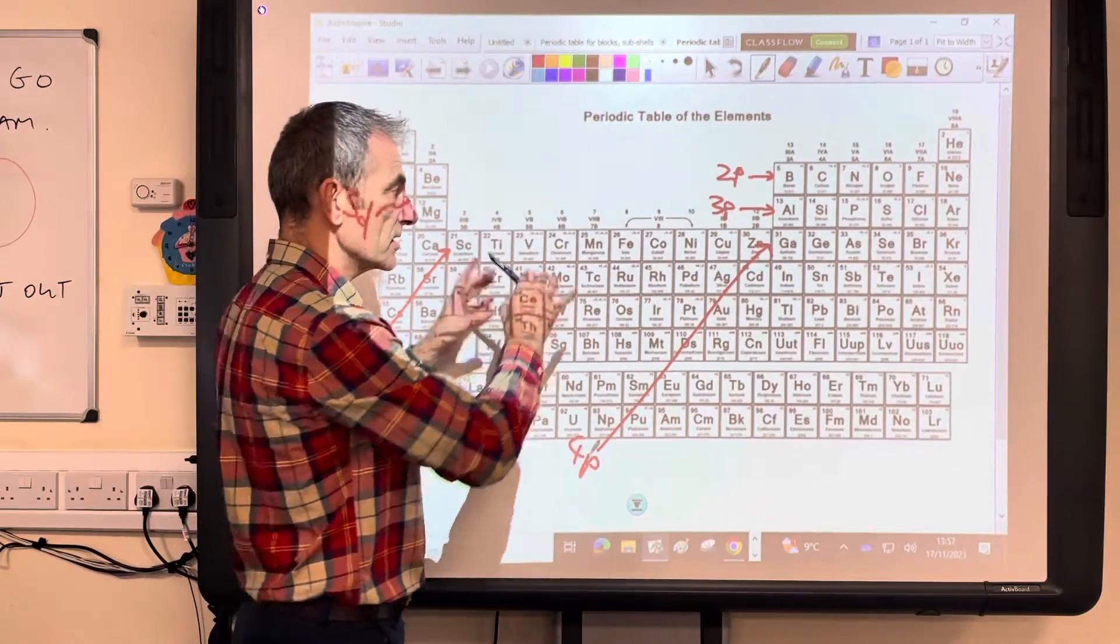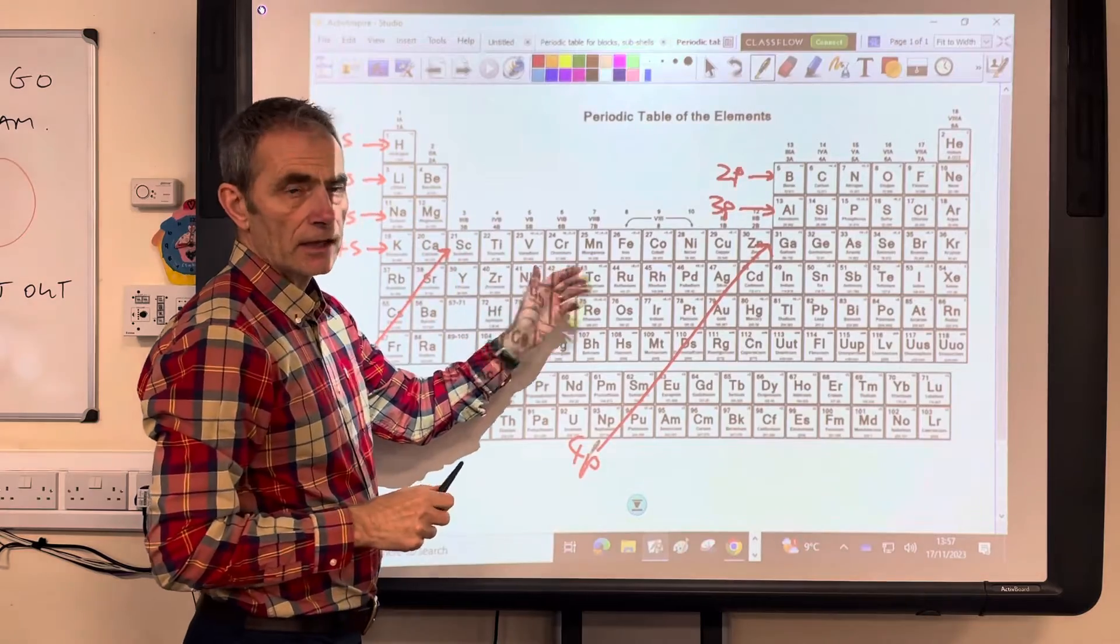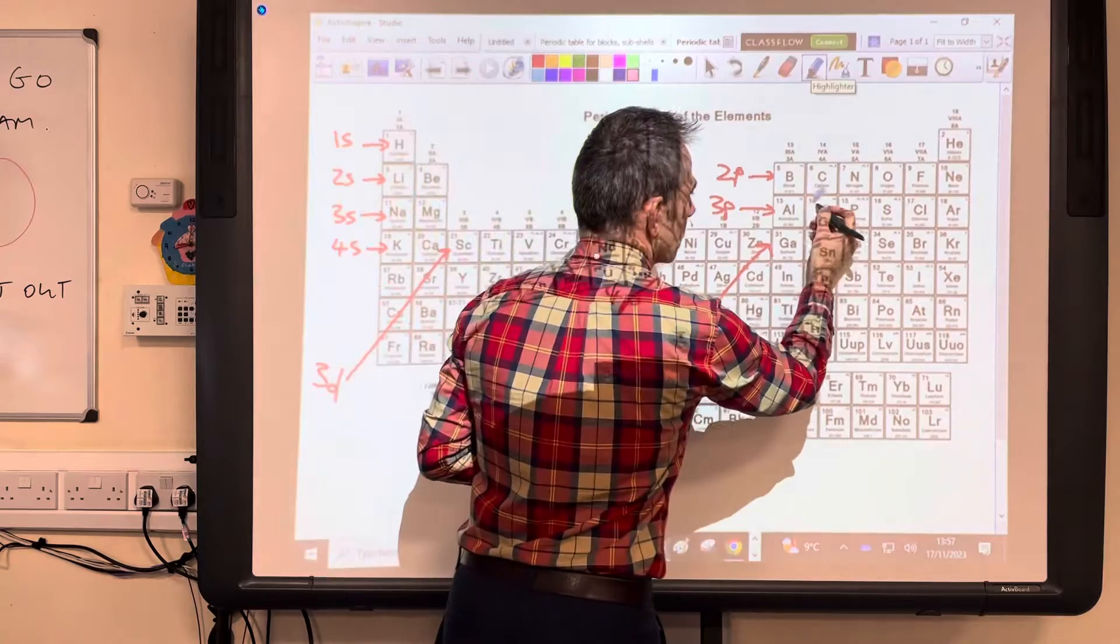So like I said at the start, the position of the element can tell you the electron configuration. So I'll give you a couple of examples. Let's go for silicon.